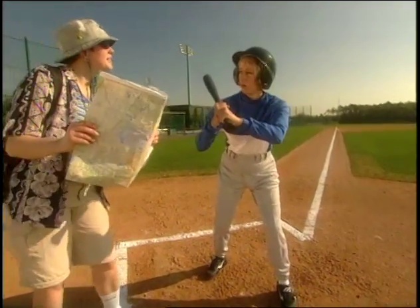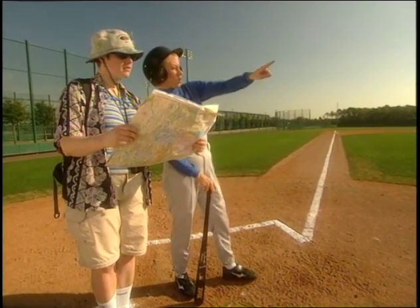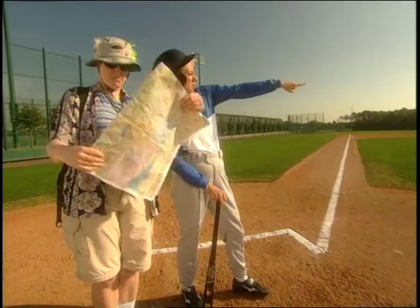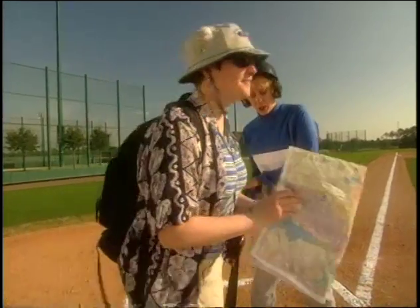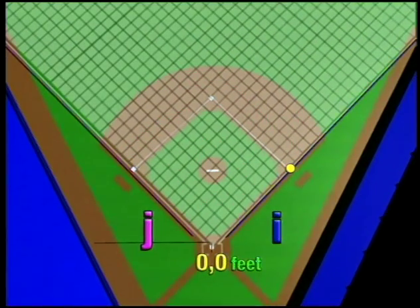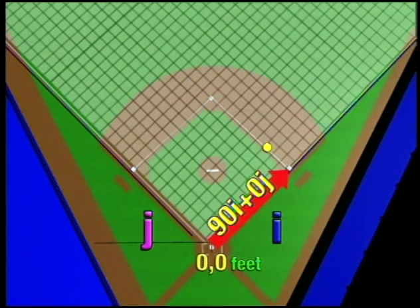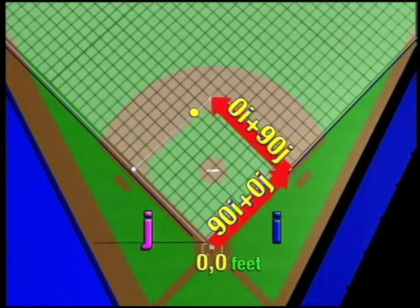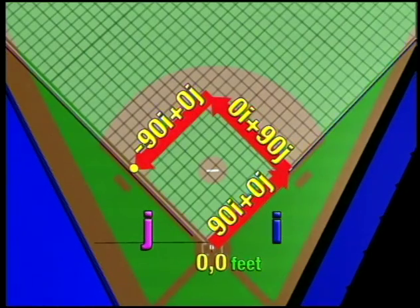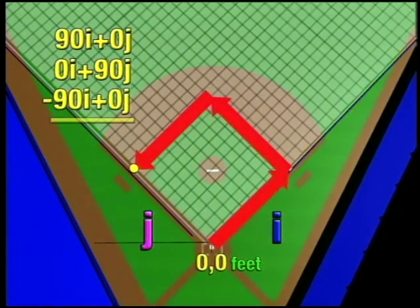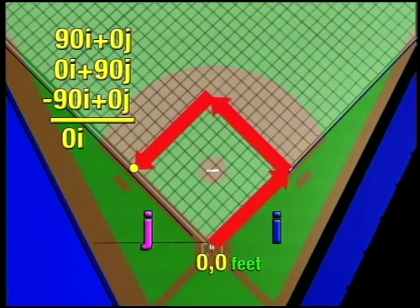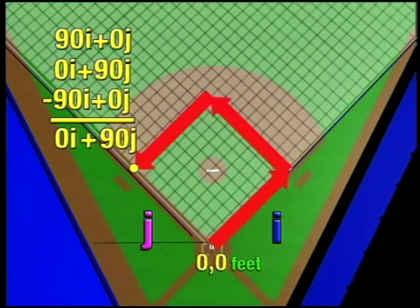Can you tell me how to get to third base? Sure — you just go 90i plus 0j, then 0i plus 90j, and then negative 90i plus 0j. Can't miss it! The vectors tell us how to go in order to get to third base. The vector 90i plus 0j takes you to first; 0i plus 90j gets you to second; and negative 90i plus 0j takes you to third. If we added these vectors together: 90i plus 0i plus negative 90i gives us 0i, and 0j plus 90j plus 0j gives us 90j — so 0i plus 90j is the coordinate of third base.